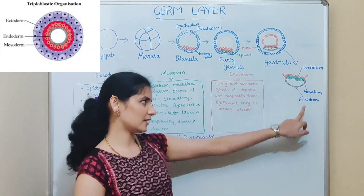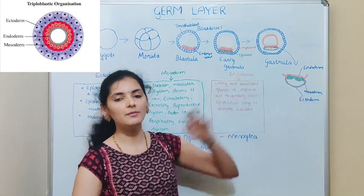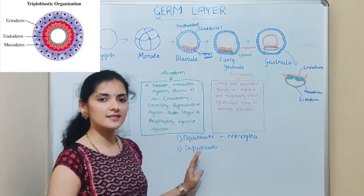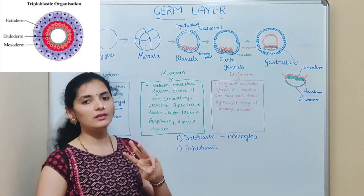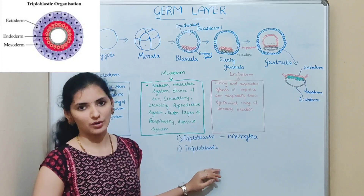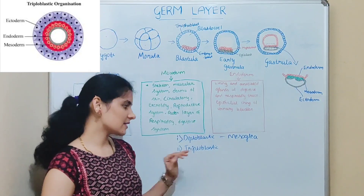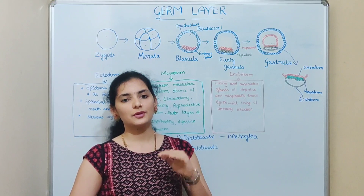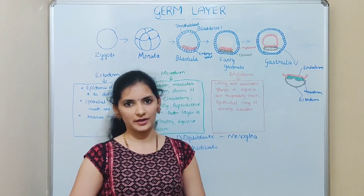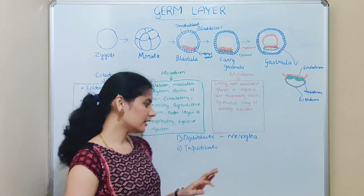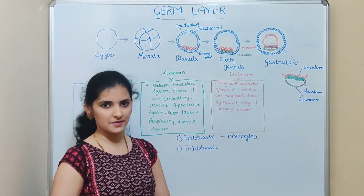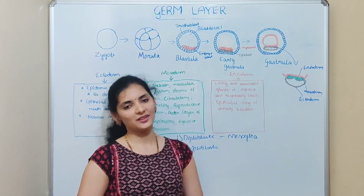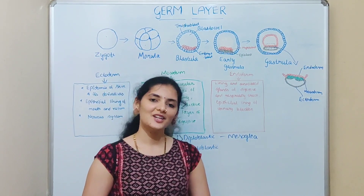The second type is triploblastic organisms. These are organisms having all three germ layers — ectoderm, endoderm, and mesoderm — meaning the body is derived from all three embryonic germ layers. Examples include all organisms from Platyhelminthes to chordates. These are the two types of organisms classified based on the number of germ layers.